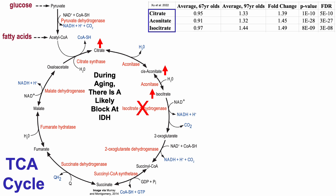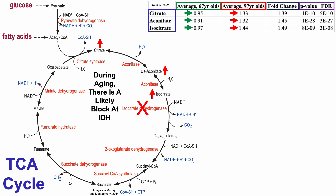On the left we've got relative levels from an untargeted metabolomic analysis, so the actual values weren't quantified — it's relative expression. We've got levels of these three metabolites in 67-year-olds versus 97-year-olds, the fold change comparing the two groups, and whether differences were statistically significant using the p-value and FDR, or false discovery rate. Values below 0.05 indicate a statistically significant association. Citrate, aconitate, and isocitrate are each higher in the 97-year-olds' plasma levels when compared with the 67-year-olds — 39% to 49% higher — and these differences were statistically significant.